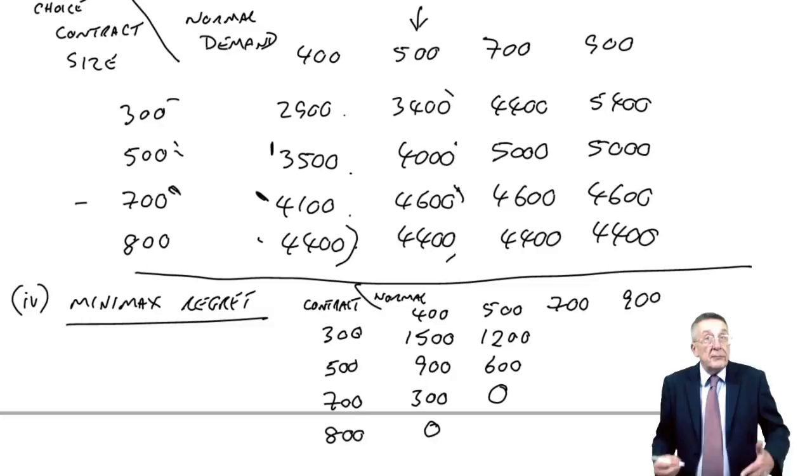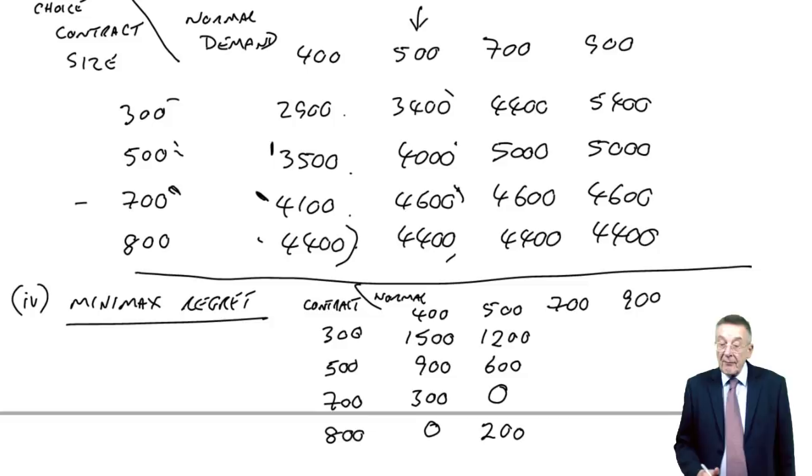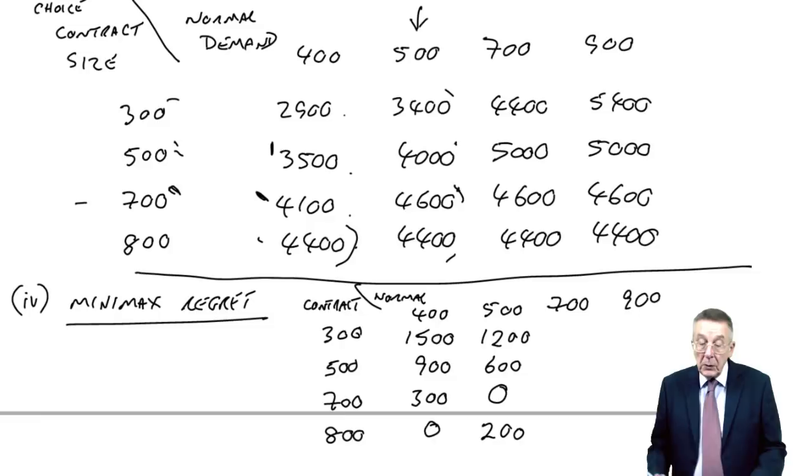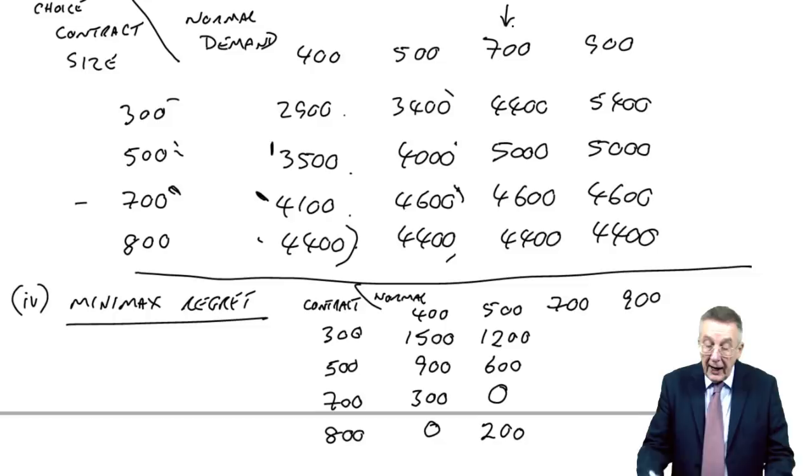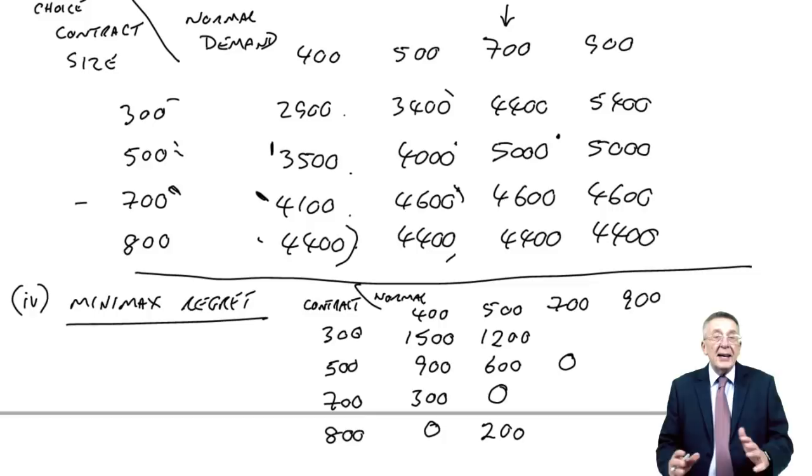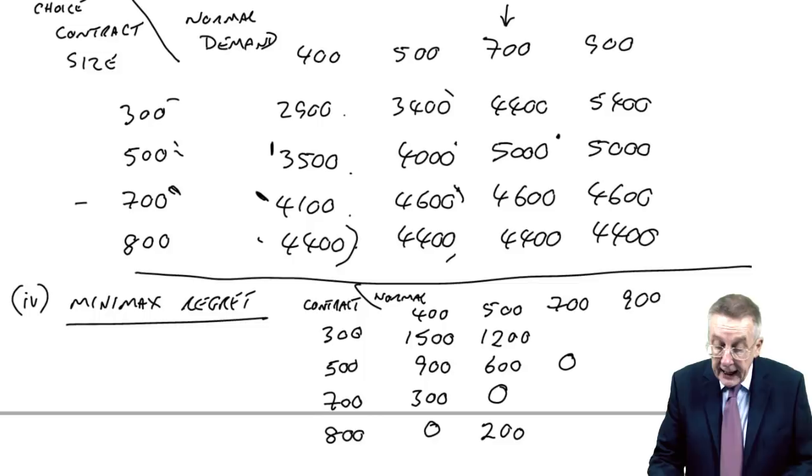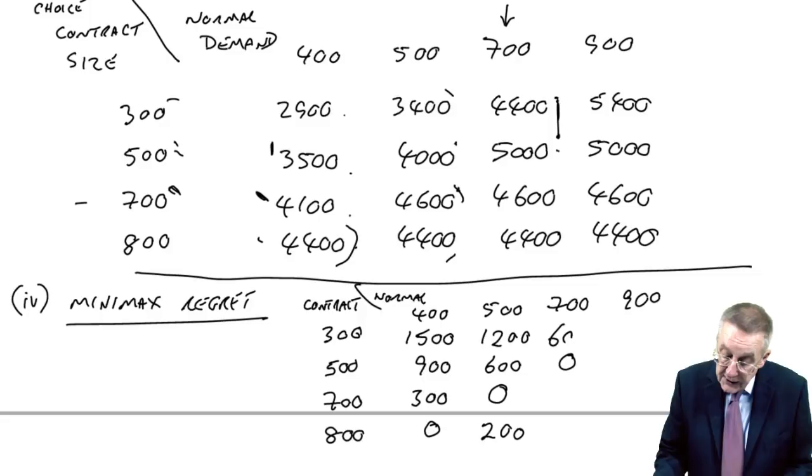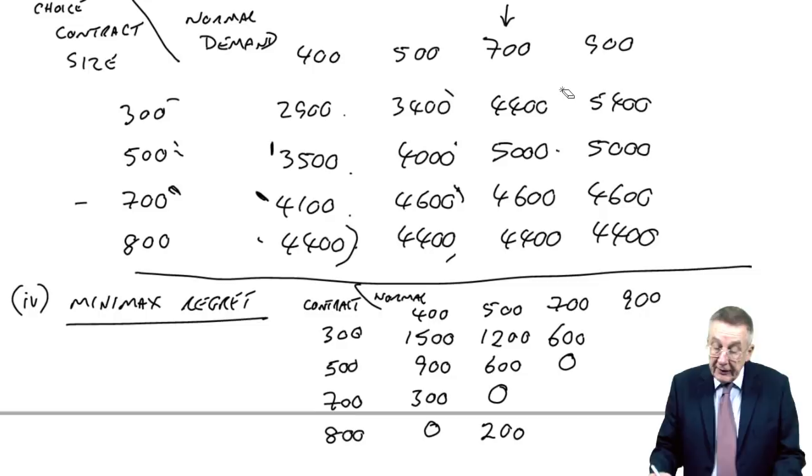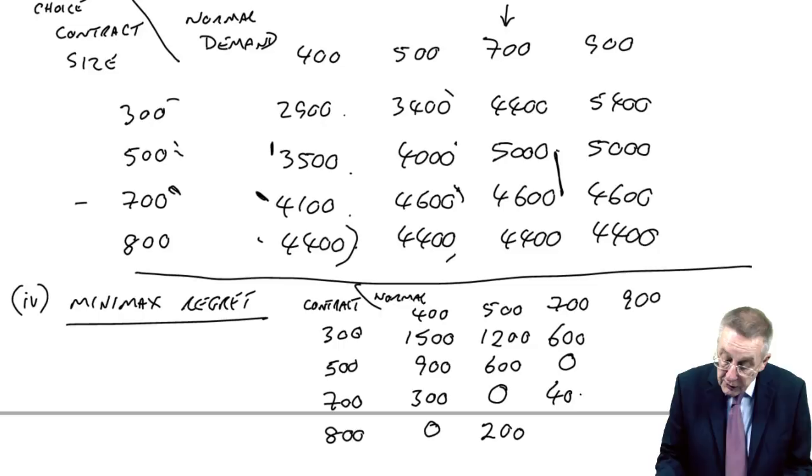Now, I hope my notes begin to be clear. I will carry on with the others. Now turn to a normal demand of 700, the next level of uncertainty, and forget the others. What would have been the best course of action? To get the highest profit of 5,000, we'd have gone for 500. If we'd gone for 500, no regret. If we'd gone for 300, we'd only get 4,400, and we could have had 5,000. The difference, we'd lost 600. If we'd gone for 700, we'd only get 4,600, and we could have had 5,000. The difference is 400. And finally, if we'd gone for 800, we'd only have had 4,400, we could have had 5,000. The regret, the loss, the opportunity cost, the difference, 600.